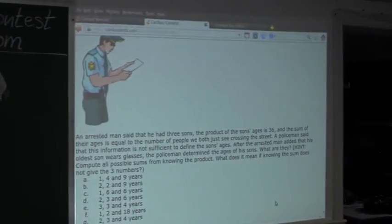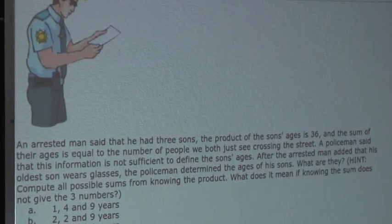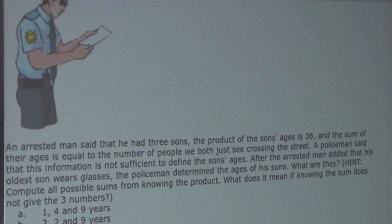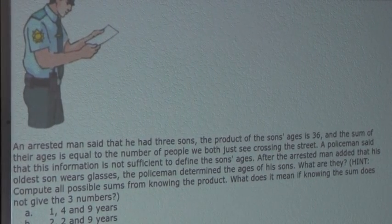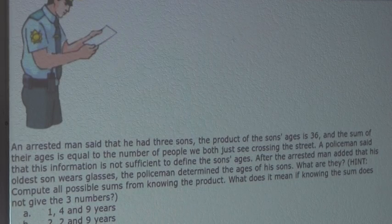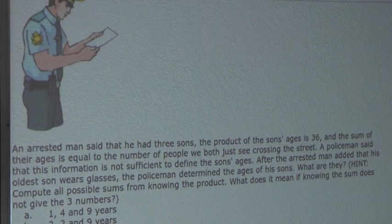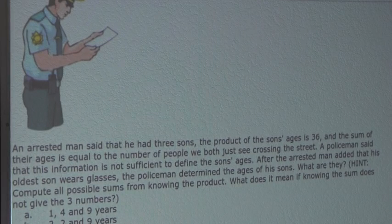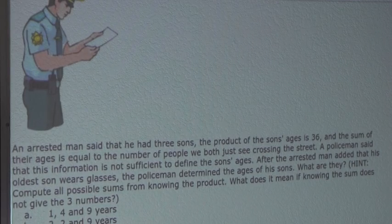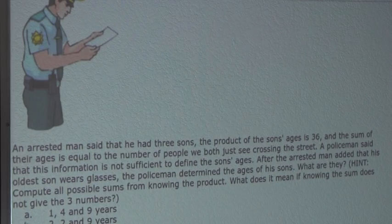Now the question is: An arrested man said that he had three sons. The product of the sons' ages is 36, and the sum of their ages is equal to the number of people we both just see crossing the street. A policeman said that this information is not sufficient to define the sons' ages. After the arrested man added that his oldest son wears glasses, the policeman determined the ages of his sons. What are they?